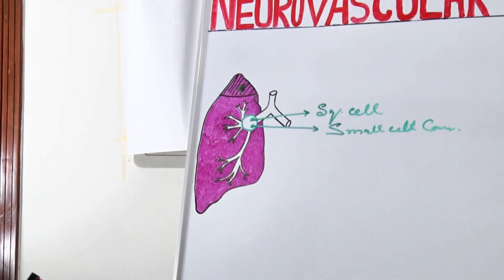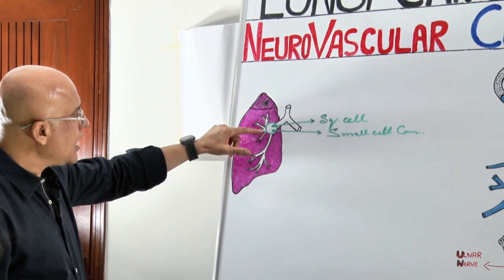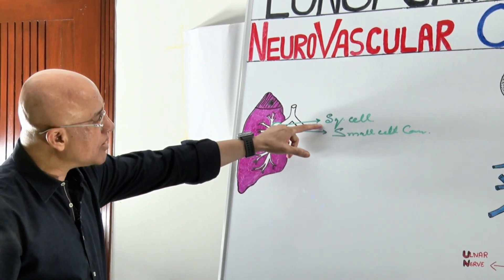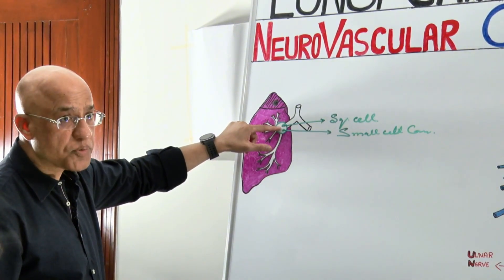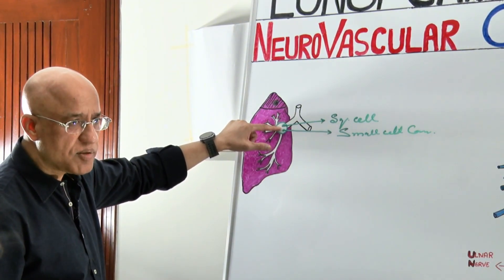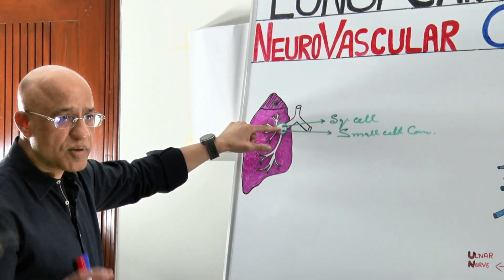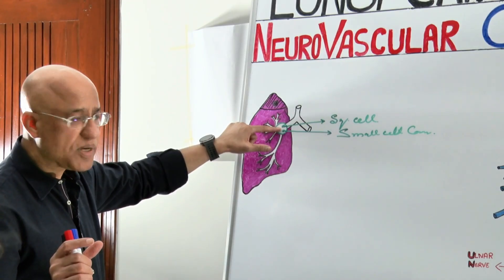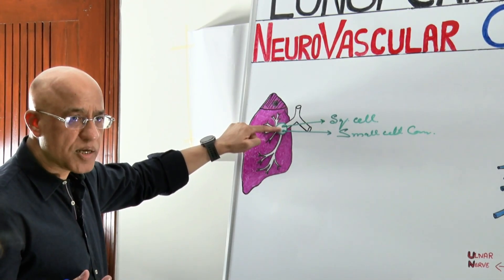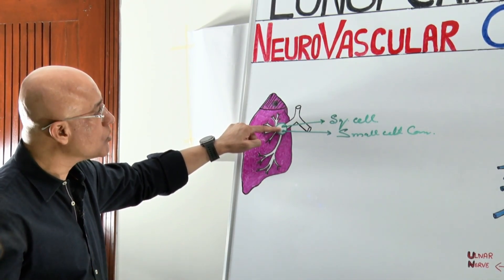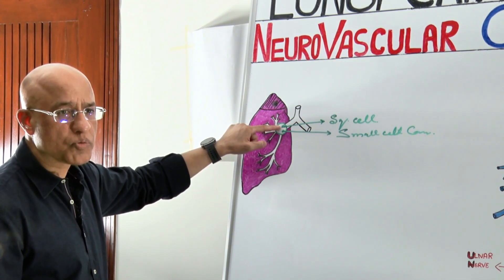These are central tumours; they have bronchogenic origin. Squamous cell carcinoma — their cell of origin is basal cells present in the bronchial lining. These cells, if they get metaplastic and make squamous epithelium, that squamous epithelium can convert into squamous cell carcinoma. It is very commonly found in people who are smoking.